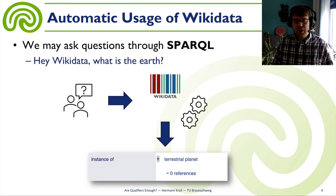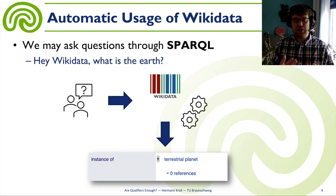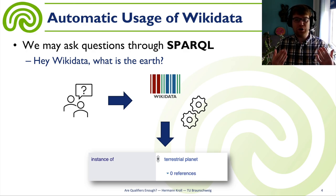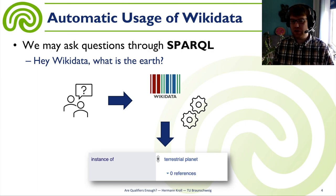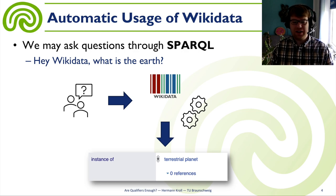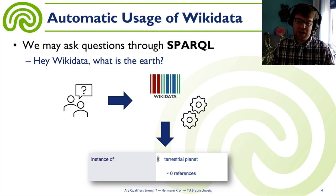What can we do with Wikidata? On the one hand, we can go to the website, browse through the knowledge and learn things — this is how humans could interact with Wikidata. But we also have the option to use it in an automated way. There's a query language for knowledge bases called SPARQL, and we can ask structured queries. Something like: 'Hey Wikidata, what is the Earth?' And Wikidata could reply that it's an instance of a planet.